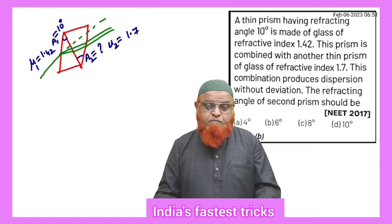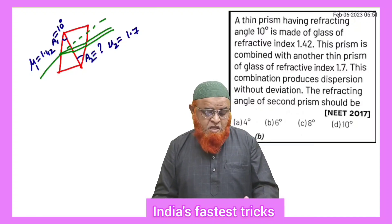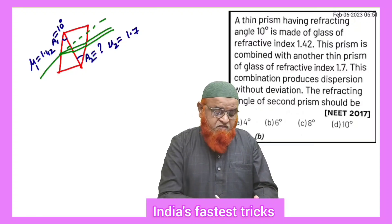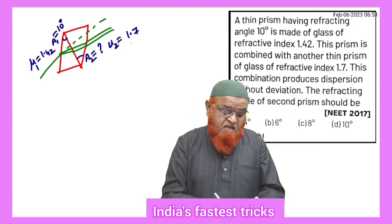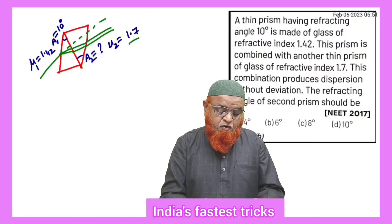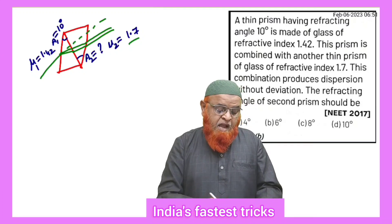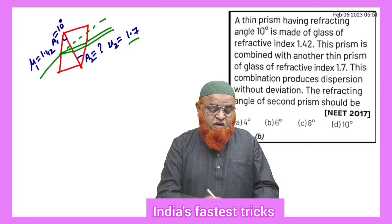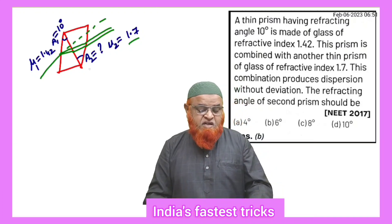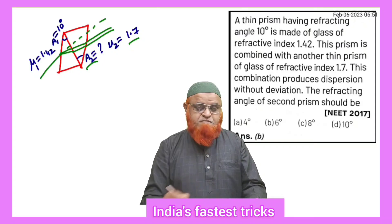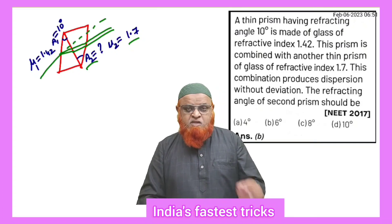There are two thin prisms whose refractive indices are given as 1.42 and 1.7, and the angle of one prism is given as 10 degrees. The angle of the other prism we have to find out.